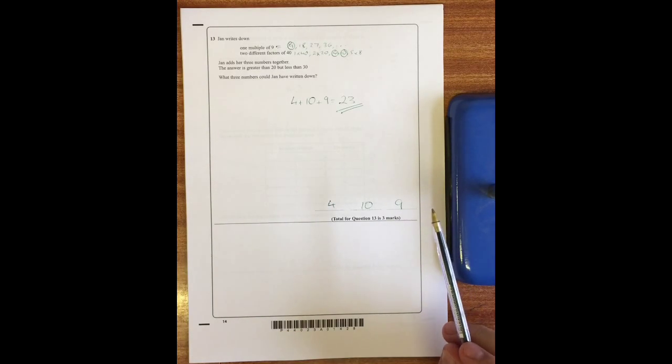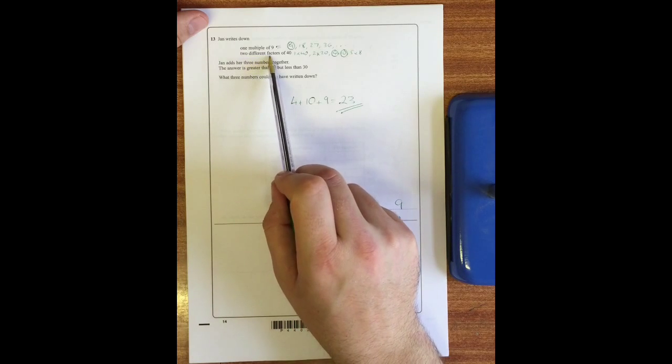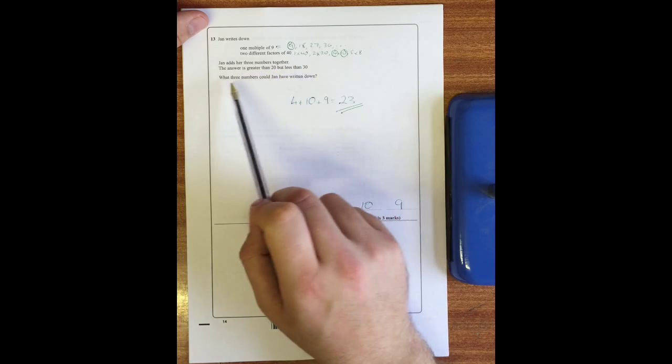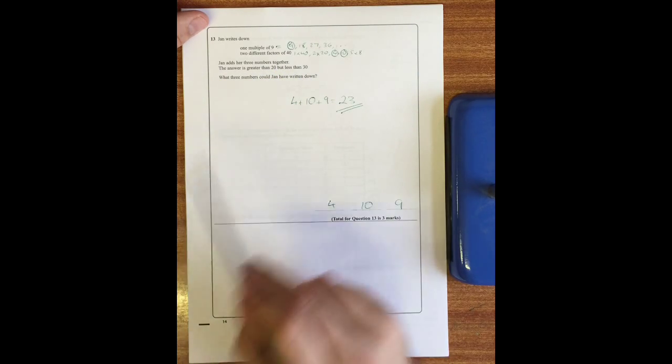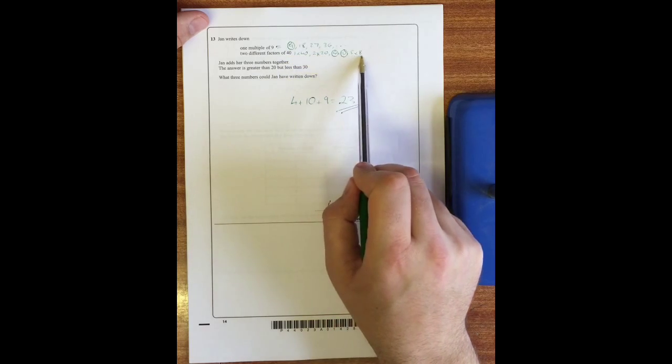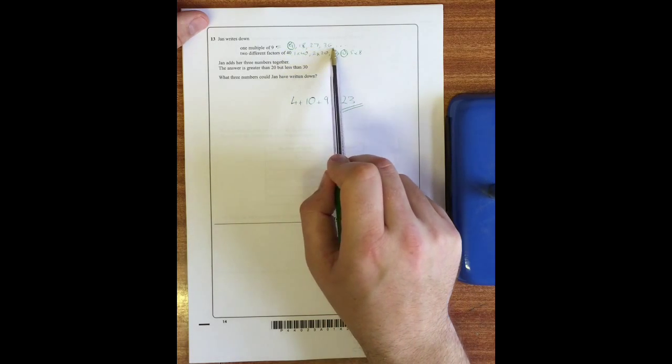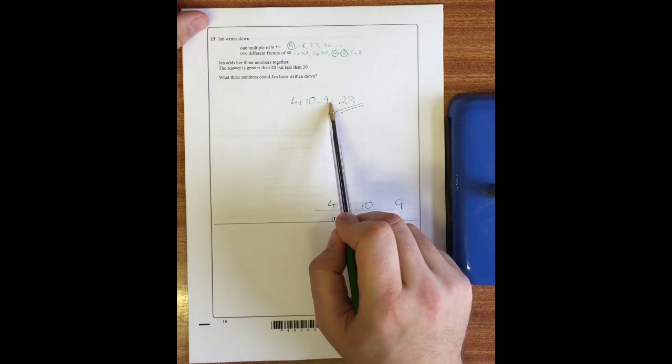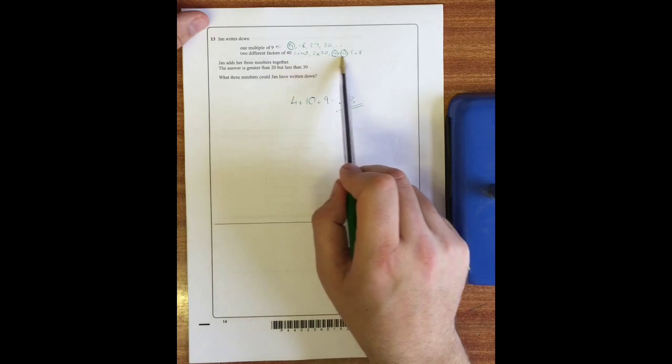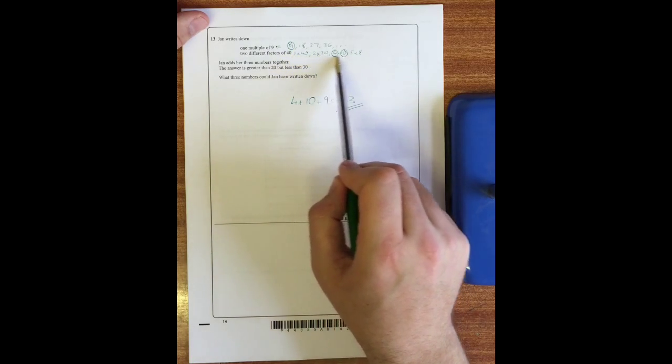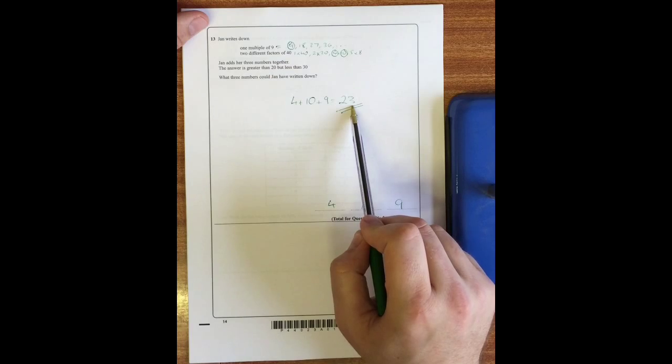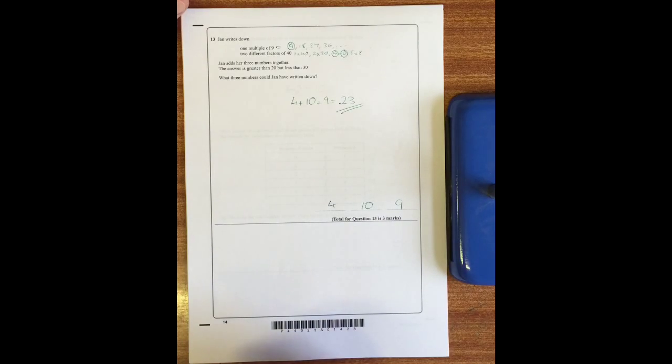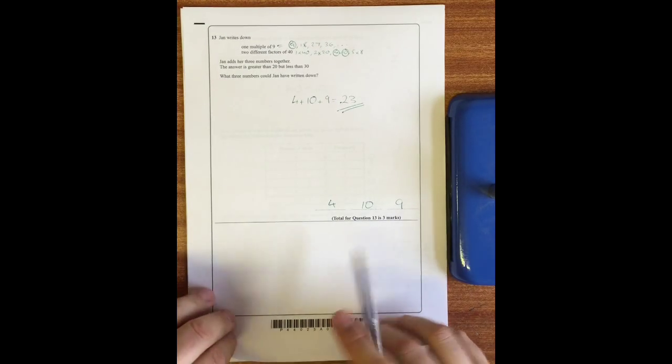Question 13: Jan writes down one multiple of nine and two different factors of 40. Jan adds her three numbers together and she gets an answer between 20 and 30. Write down what the three numbers are that she chose. Here are a few multiples of nine, here are a few factors of 40, and I've just chosen any three that add together between 20 and 30. I've chosen 4, 10, and 9. Provided it is one of these numbers and two of these numbers and they add together to a number between 20 and 30, not including 20 and not including 30, then your answer is fine. One mark for each number.